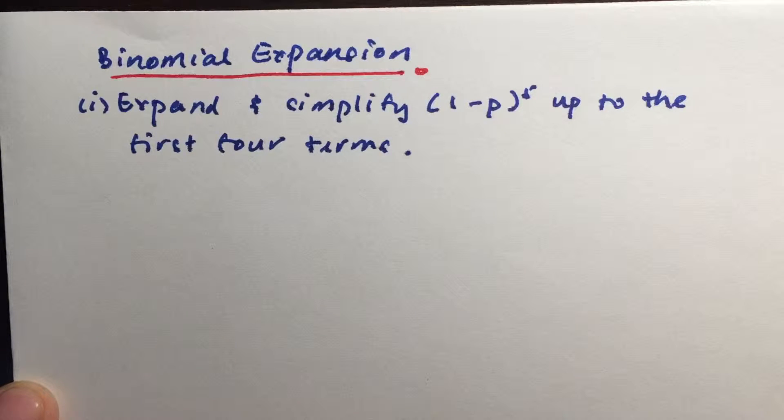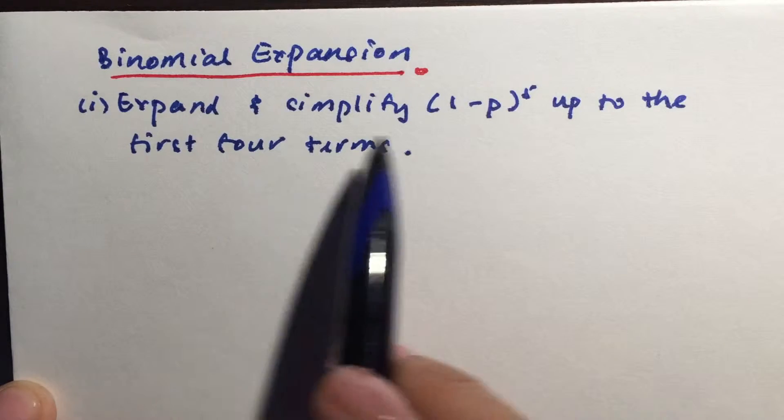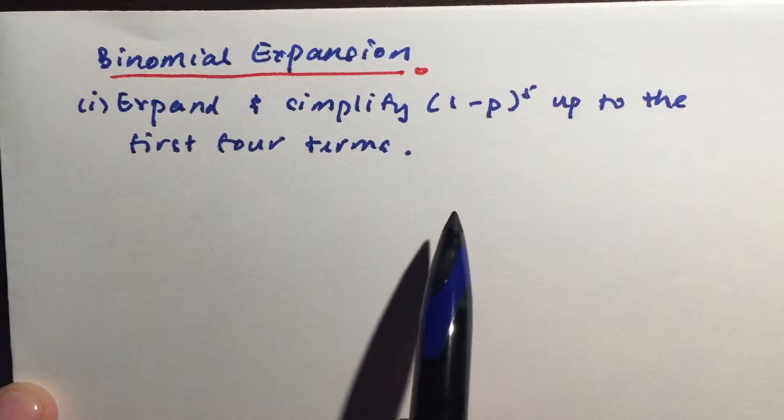Alright, today we're going to do binomial expansion. We're just going to do a very simple one. We're going to expand (1-P)^5 up to the first four terms.